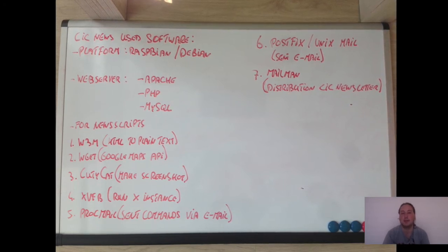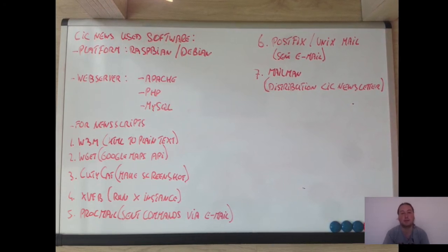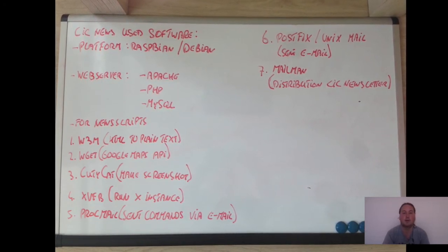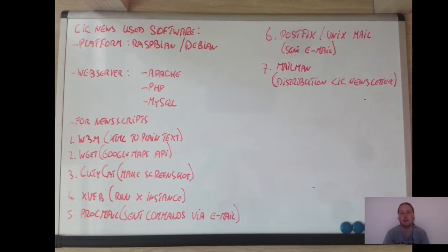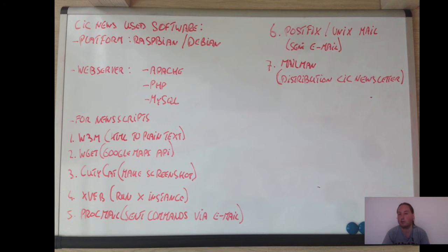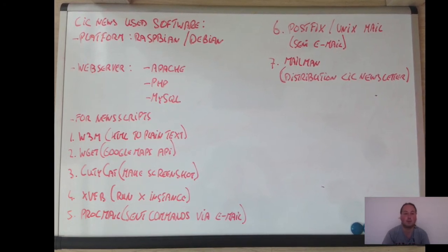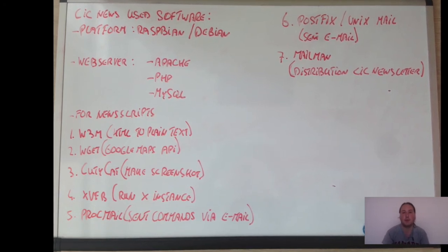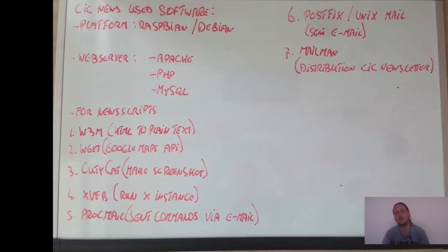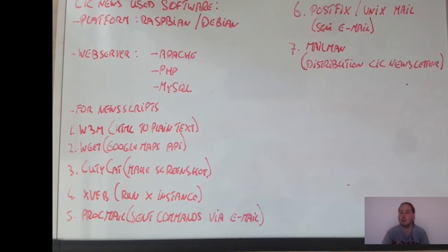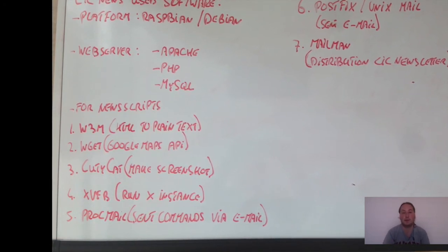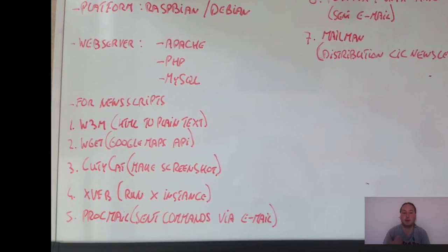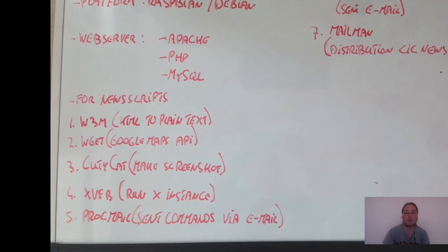Raspbian is used as the operating system, which is based on Debian. The web server on the Pi runs Apache, PHP, and MySQL — all the latest versions available. For the scripts I use the following: w3m, the text-based web browser, which I'm using to get the articles via RSS so all the article content is retrieved by w3m.